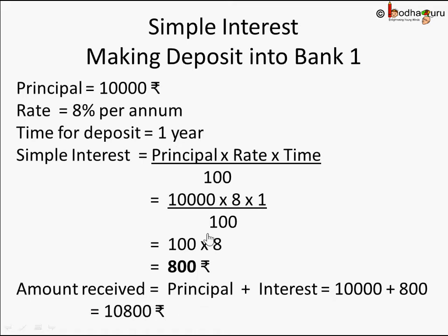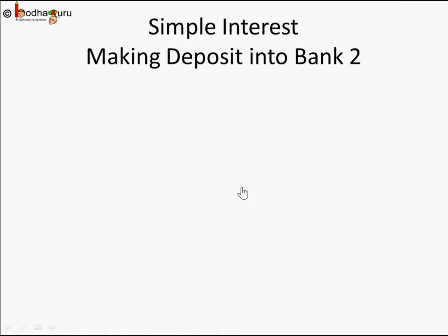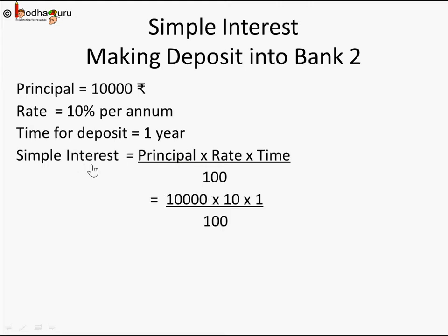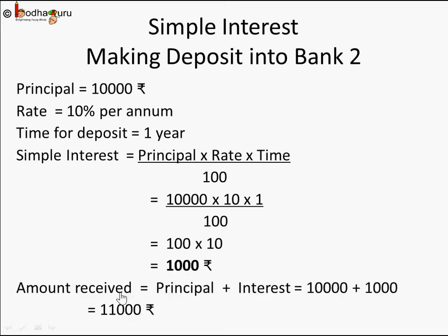For Bank 2, the principal remains the same — 10,000 rupees. The rate of interest offered is 10% per annum, meaning the bank returns 10 rupees extra for every 100 rupees after 1 year. Time for deposit is also 1 year. Using simple interest formula PRT by 100: 10,000 × 10 × 1 ÷ 100, which equals 1,000 rupees. So the amount received by Sukram from Bank 2 will be 10,000 + 1,000 = 11,000 rupees.